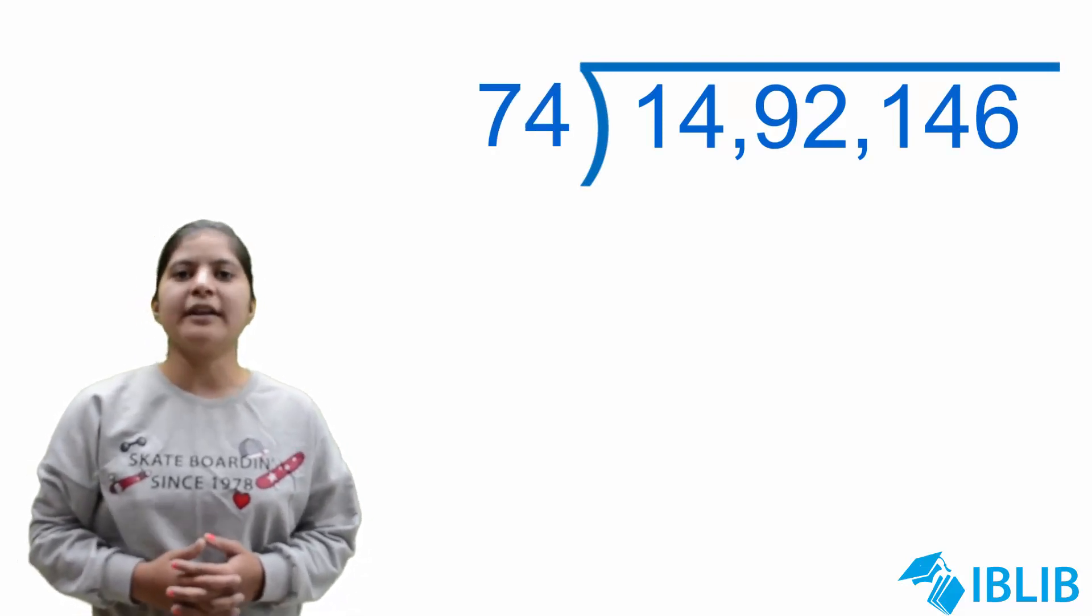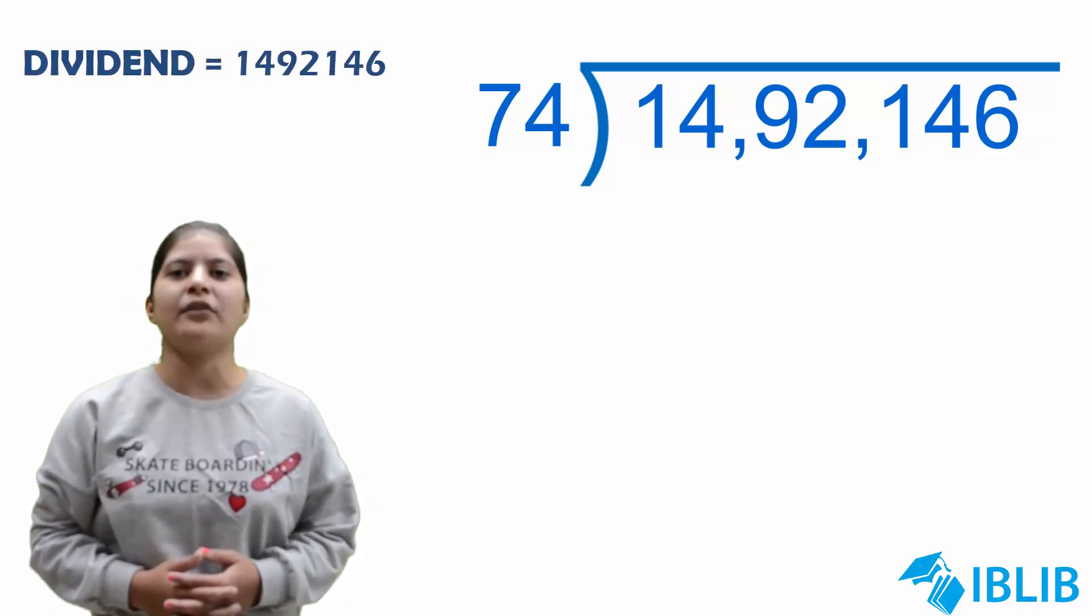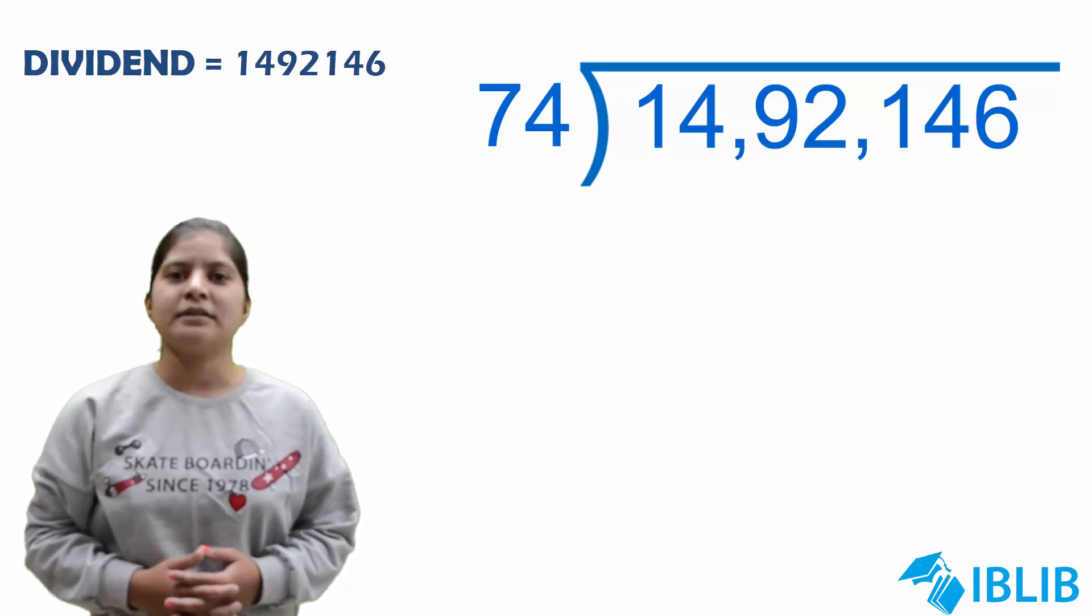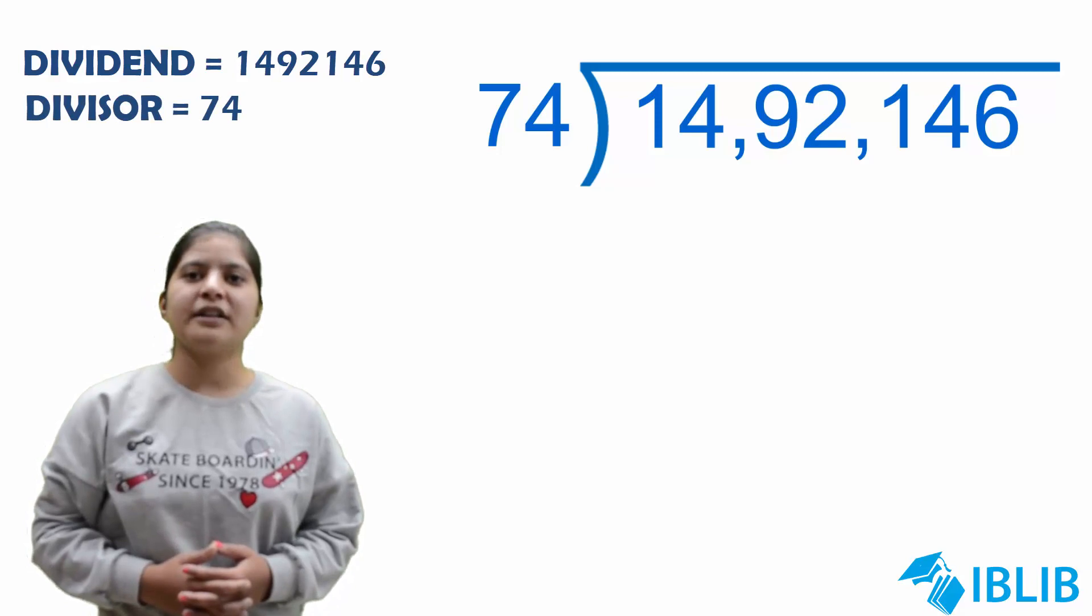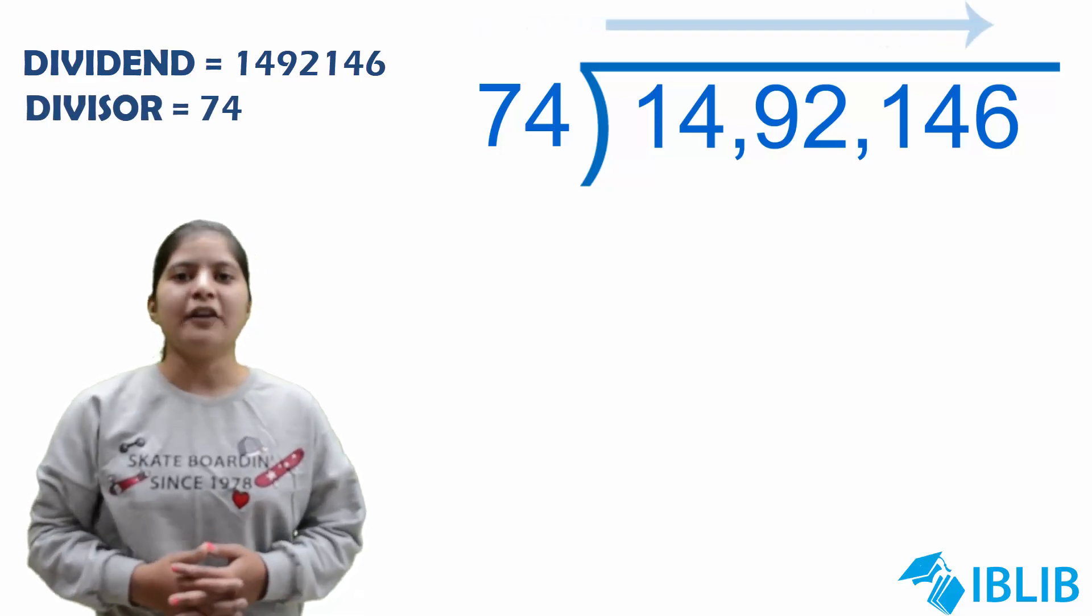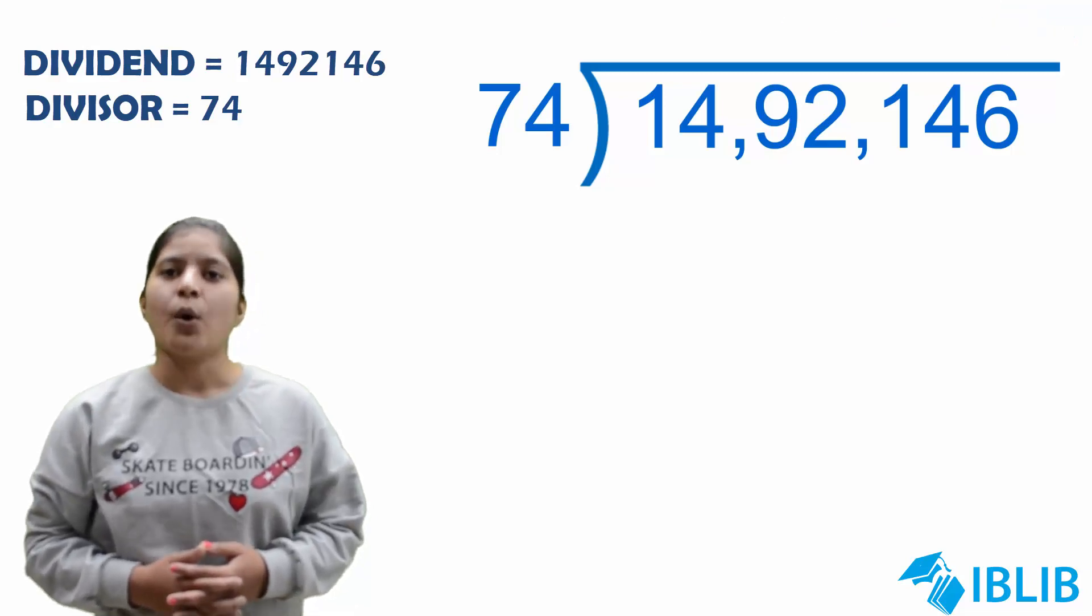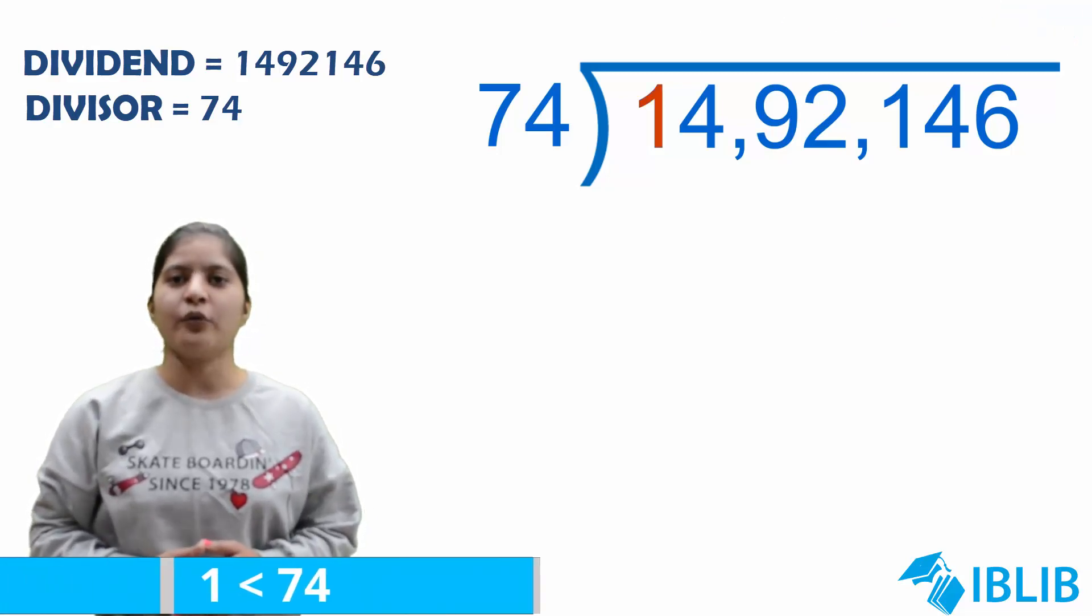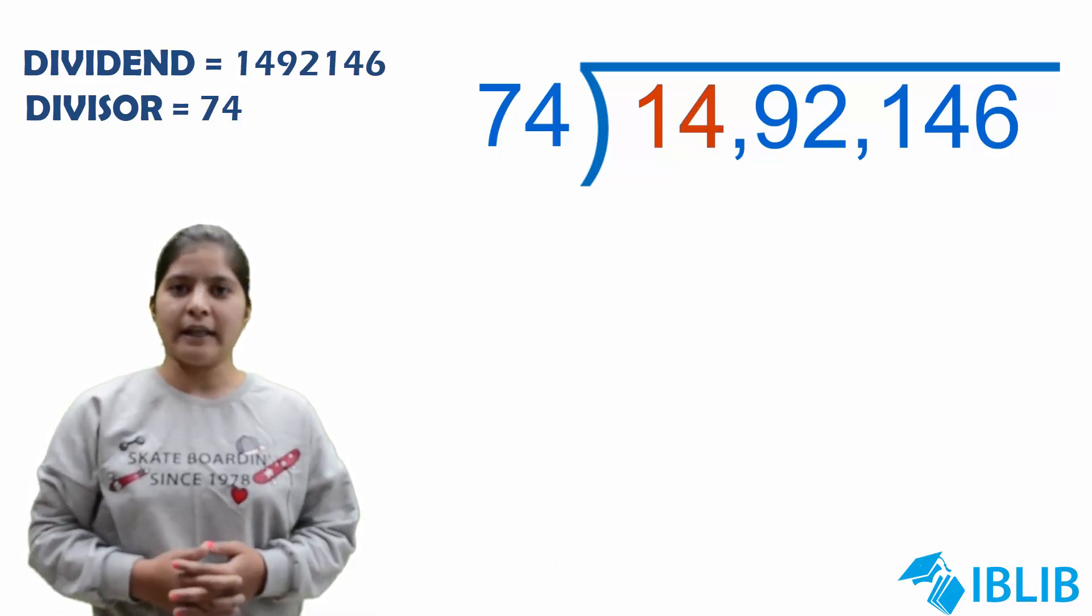Firstly, put the dividend that is 14,92,146 and the divisor that is 74. Now, we will perform digit by digit division starting from the left. The leftmost digit of the dividend is 1. As 1 is less than 74, we need to take the next digit that is 4. Now, it becomes 14.